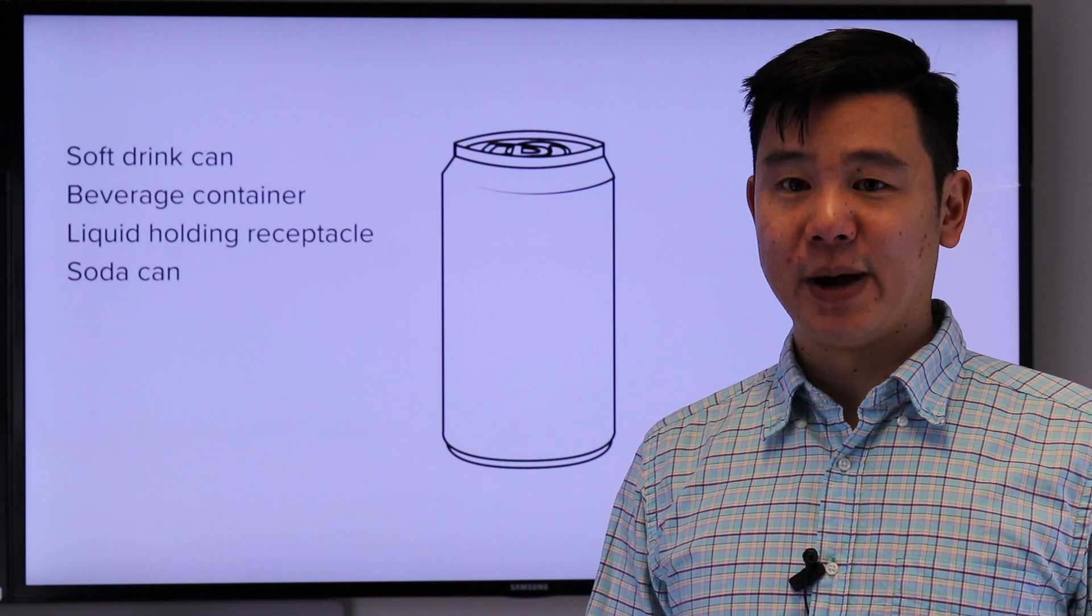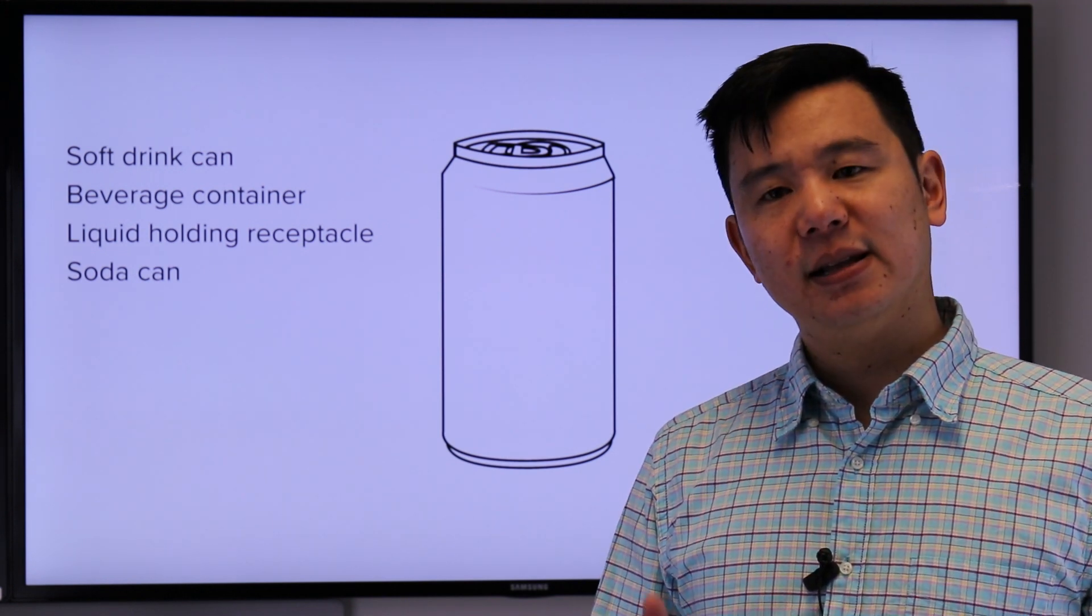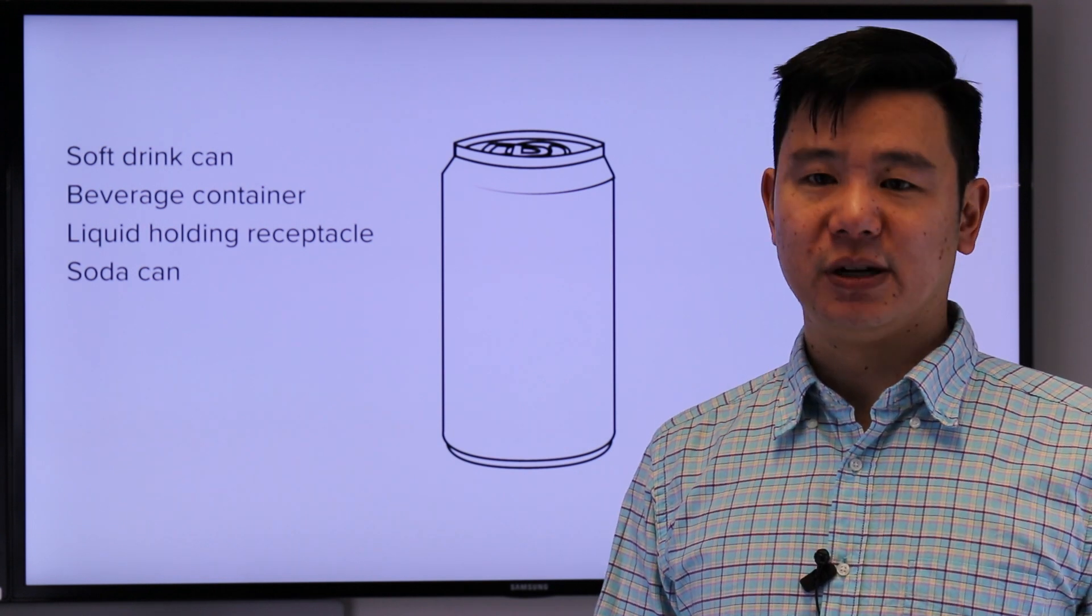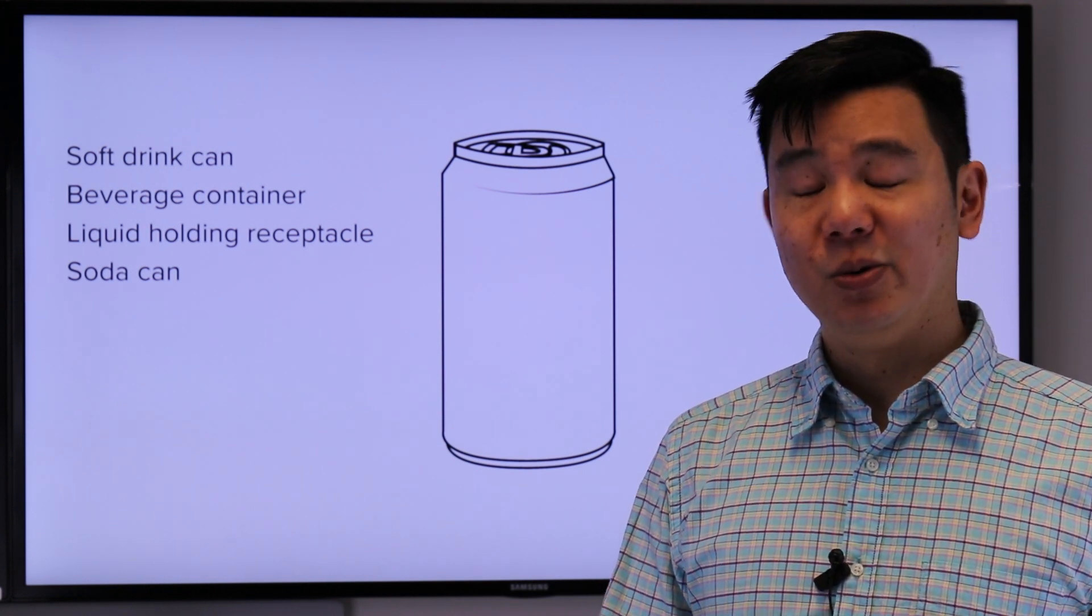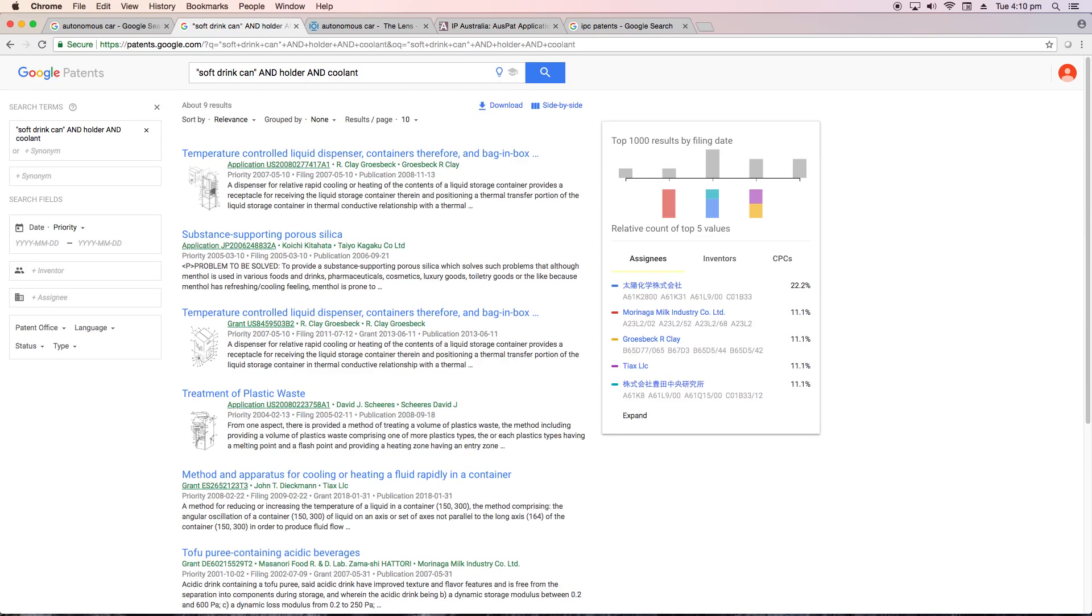Now, let's have a closer look at Google Patents and see what you can expect when you start searching. Let's say that I've invented a new product, a soft drink can holder which is cooled on the inside. To begin my search, I'll go to Google Patents and type some keywords. The first keyword set I'm going to try is soft drink can, holder, as well as coolant. You can see that there are not many results because I've only asked for a soft drink can, a holder and a coolant. It's pretty restrictive.